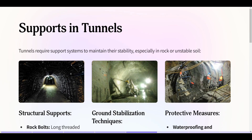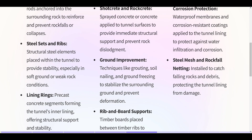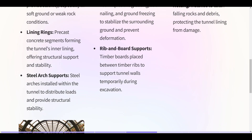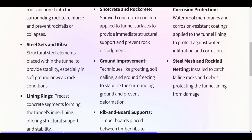Supports in tunnels. Tunnels require support systems to maintain stability, especially in rock or unstable soil. Structural supports include: rock bolts — long threaded rods anchored into surrounding rock to prevent rock falls; steel sets and ribs — structural steel elements for stability in soft ground or weak rock; lining rings — precast concrete segments forming the inner lining; and steel arch supports that distribute loads. Ground stabilization includes shotcrete and rockcrete applied to tunnel surfaces, and techniques like grouting, soil nailing, and ground freezing.